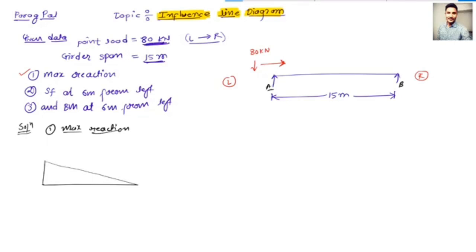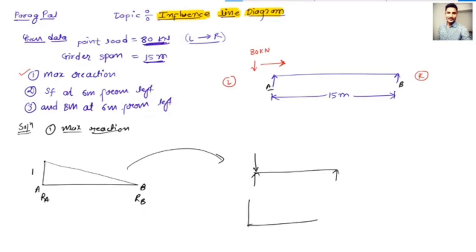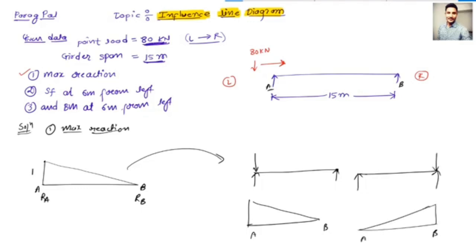This is my B point, this is my A point — so this is my Ra reaction and this is my Rb reaction. Now you may be thinking about why I draw this kind of diagram. Because when your load is at this point, your diagram will be like this since there is no support here. If the condition changes and the load is at point B, then your diagram looks like this.